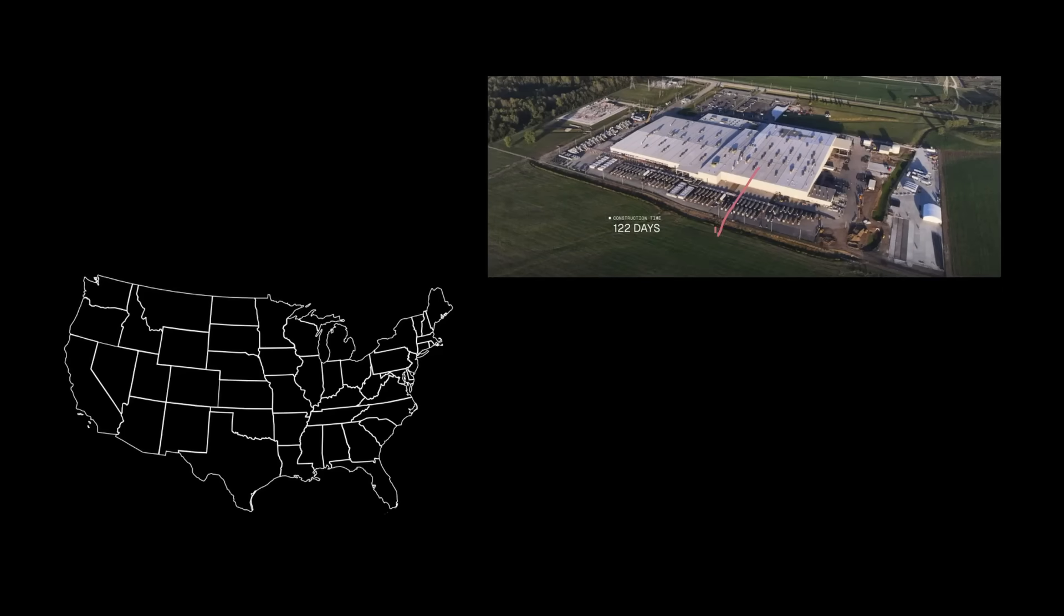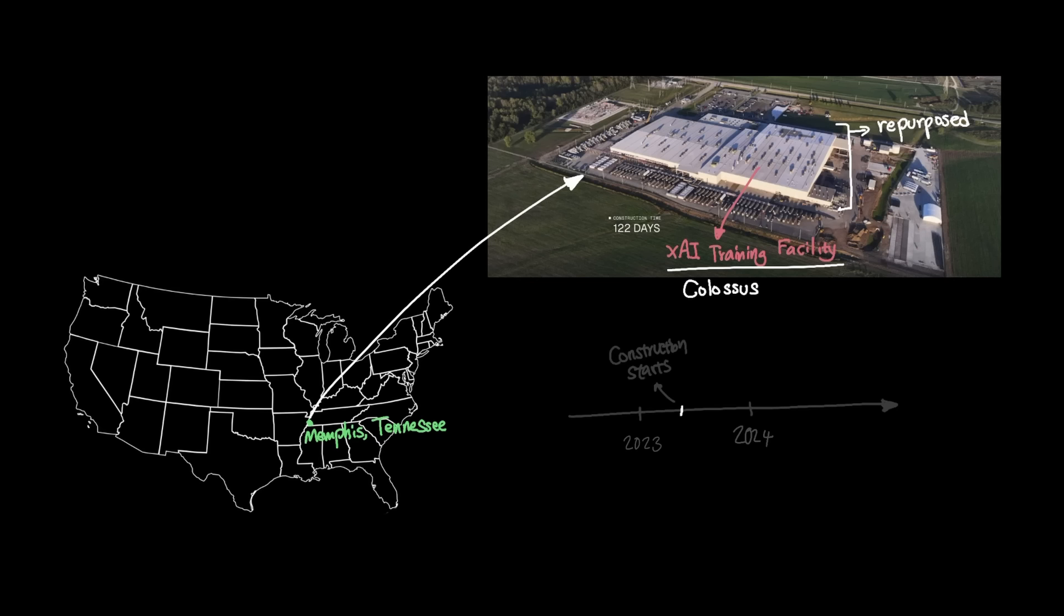Let's start with xAI's training facility in Memphis, Tennessee called Colossus. xAI's Colossus facility began construction in Memphis in May 2023. Instead of building from scratch, they repurposed a factory that makes home appliances to now a 785,000 square feet AI training facility.